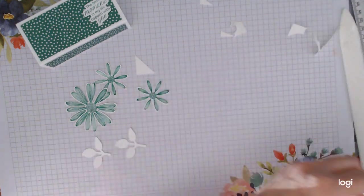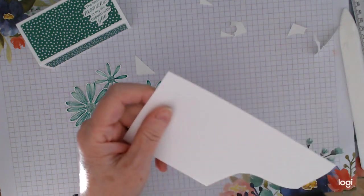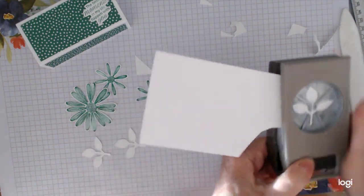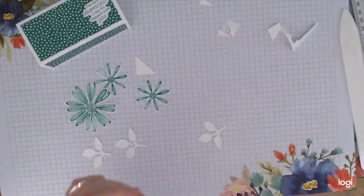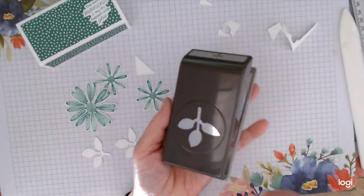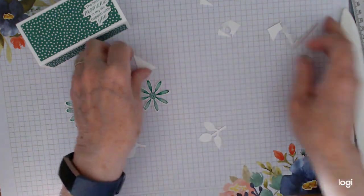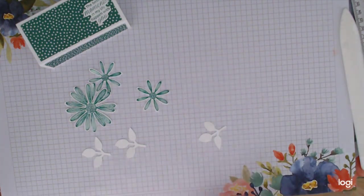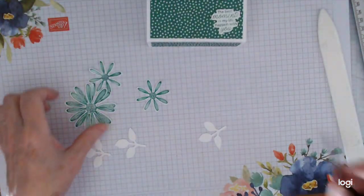So while you have that scrap there, punch yourself out three sets of leaves, just in the white as well, if you can get three out of it. I'm not going to bother too much about missing that little bit. I hope—now I need another bit somewhere. There we go.